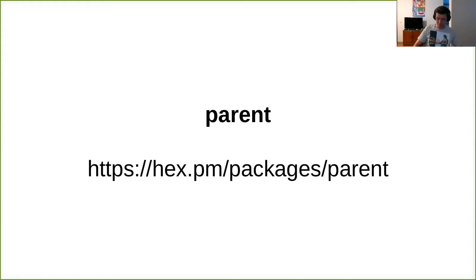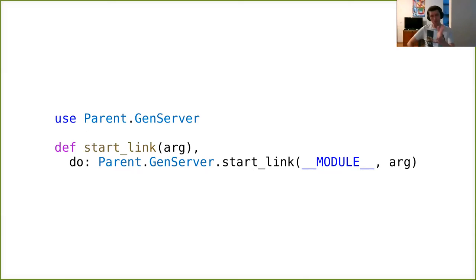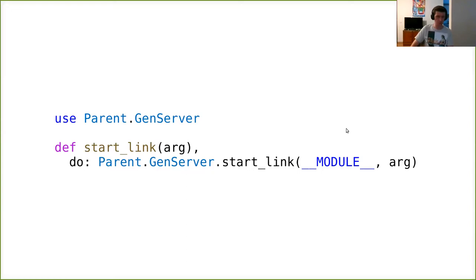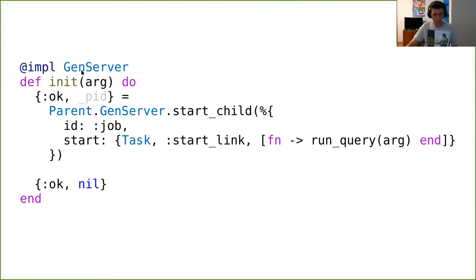Let me show how to rewrite the previous query manager sketch using parent. First, we use Parent.GenServer instead of GenServer. To start the process, you invoke Parent.GenServer.start_link — same input types, same output types, same behavior. In the server itself, the init callback is a GenServer callback, not a Parent.GenServer callback — this is not a typo. Parent does not try to hide the fact that you're still writing a GenServer; it's just extra behavior inside the GenServer using the same familiar abstraction.